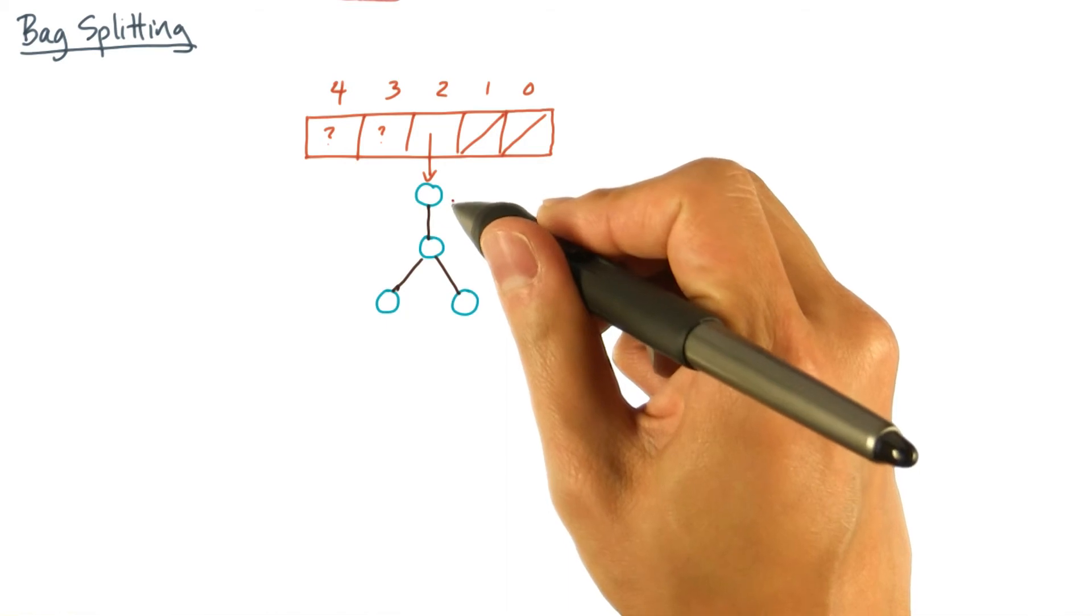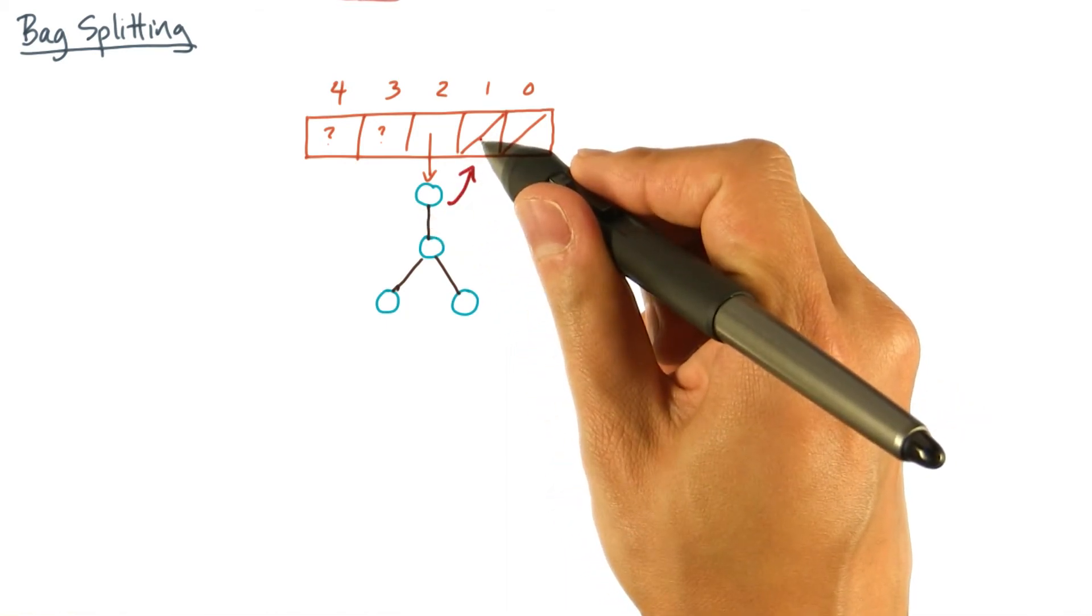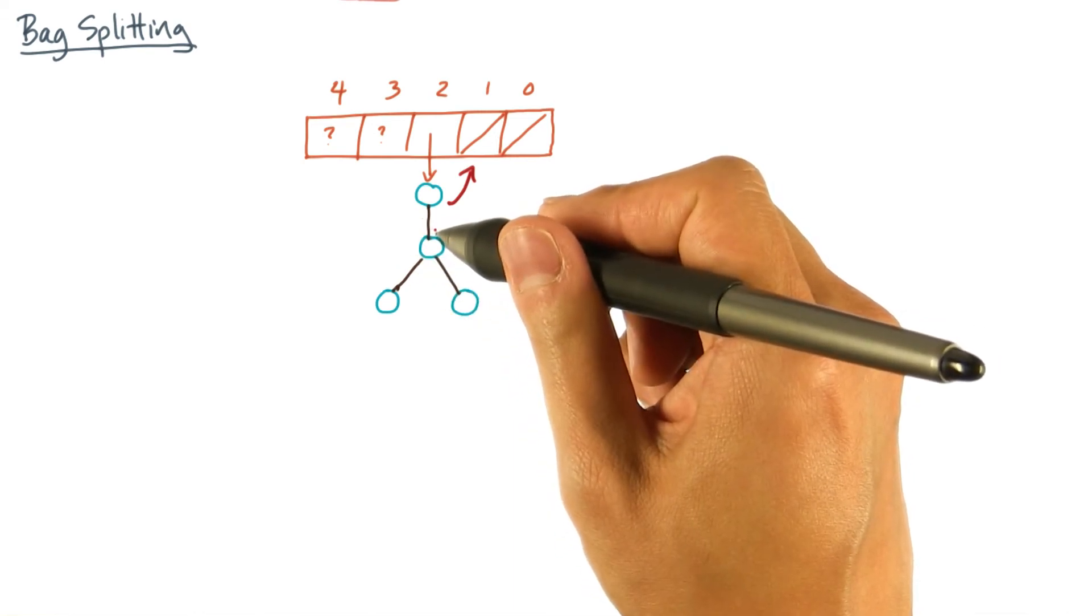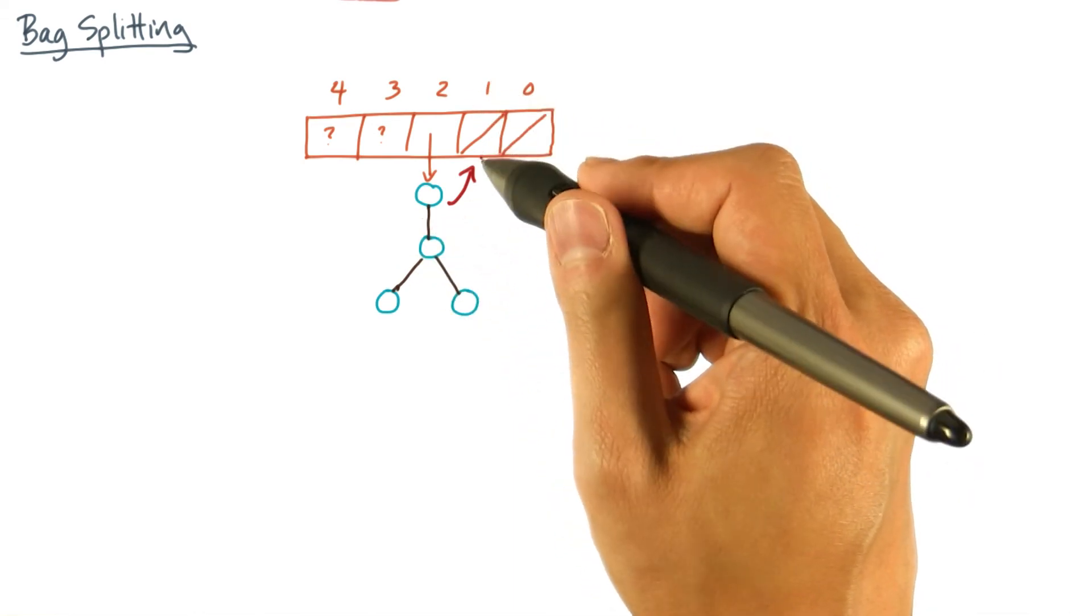To shift this by one, or in other words, slide this into the one slot, we need to figure out how to chop up this pennant, because the one slot can only hold a pennant of size two.